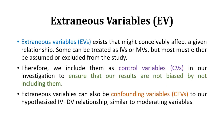Next variable is extraneous variable. These variables exist that might conceivably affect a given relationship. Sometimes they can be treated as independent or moderating variables, but most often these variables must either be assumed or excluded from the study. Therefore, we include them as control variables in our investigation to ensure our results are not biased. These extraneous variables are also known as confounding variables, used alongside the independent and dependent variable relationship.